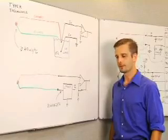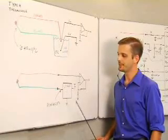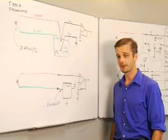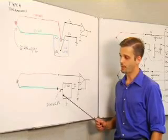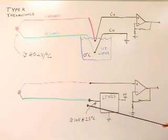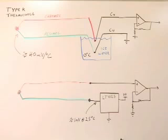Another way of dealing with the cold junction is to use one of our old devices, the LT1025 cold junction compensator. What this device does is it drives the negative terminal of the thermocouple to the same voltage that an ice bath would have driven it to, and the positive terminal can be amplified in the same way.